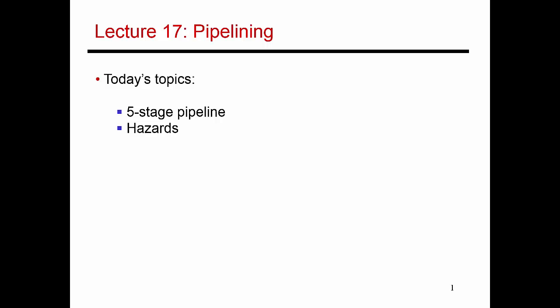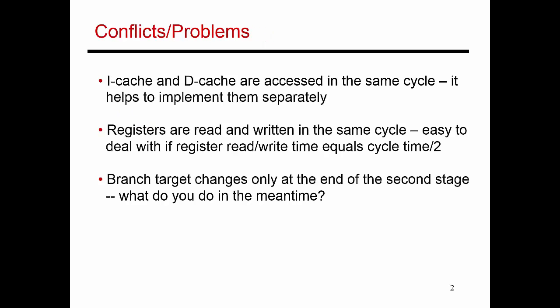In the last few videos, I described the basic five-stage pipeline. Now let's talk about a few potential problems that we encounter when dealing with this pipeline. The first is the possibility of a structural hazard or a structural conflict.